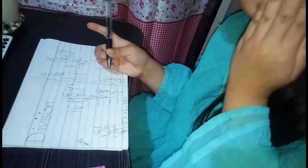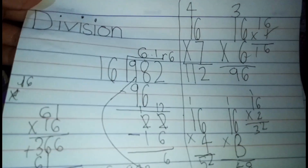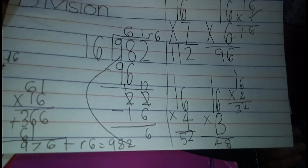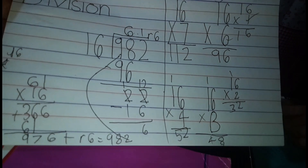So the answer is correct. The answer of 982 divided by 16 equals 61 remainder 6. So the answer is correct.